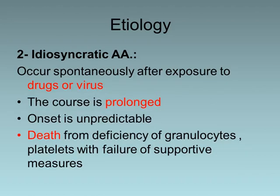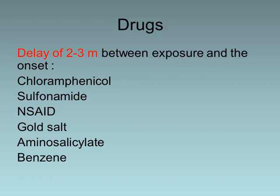The second type is idiosyncratic aplastic anemia, and this occurs spontaneously after exposure to drugs or virus. The course here is prolonged and the onset unpredictable. Death from deficiency of granulocytes and platelets with failure of supportive measures may occur. Concerning drugs, there is a delay of 2 to 3 months between exposure and the onset.